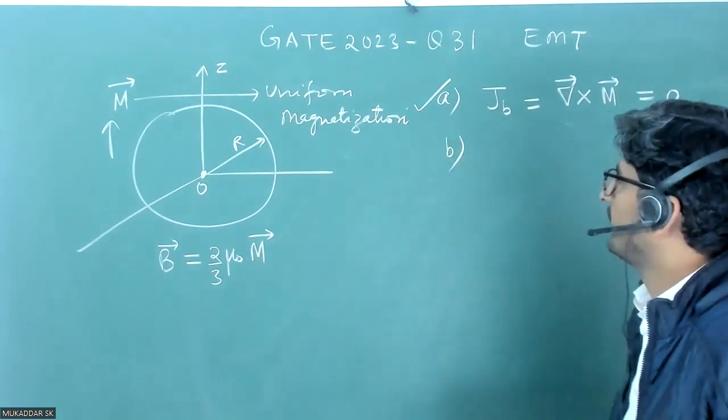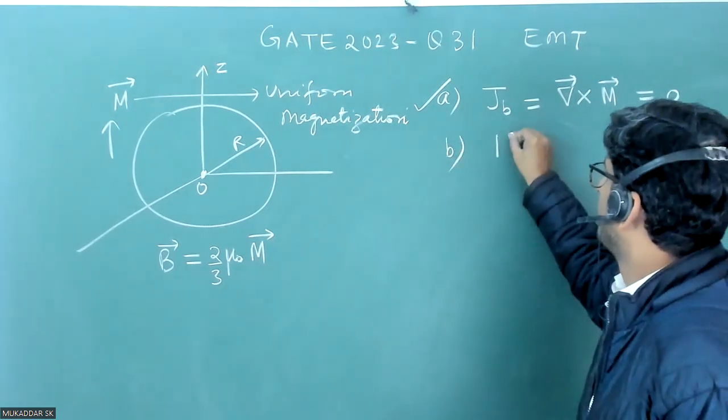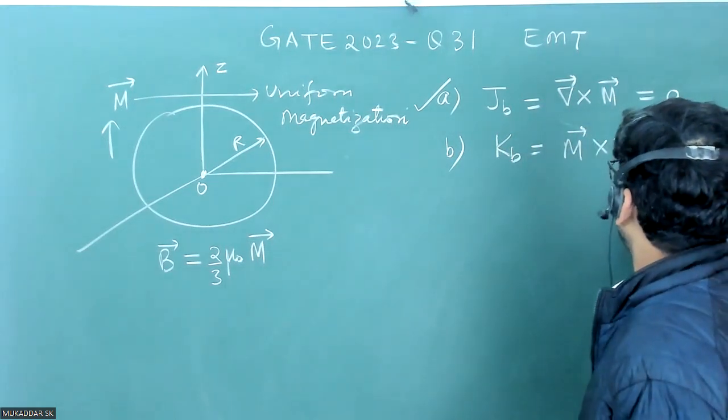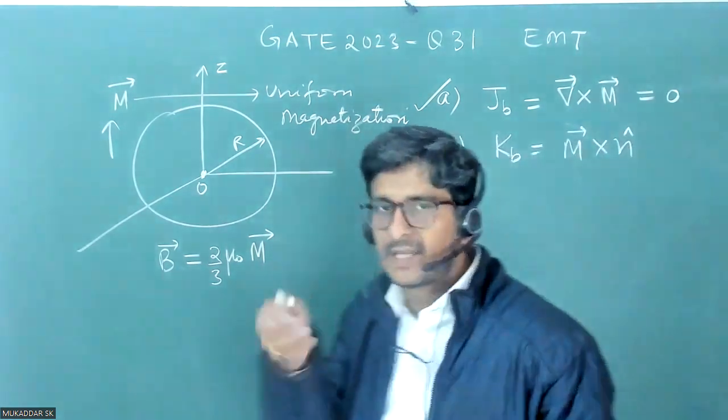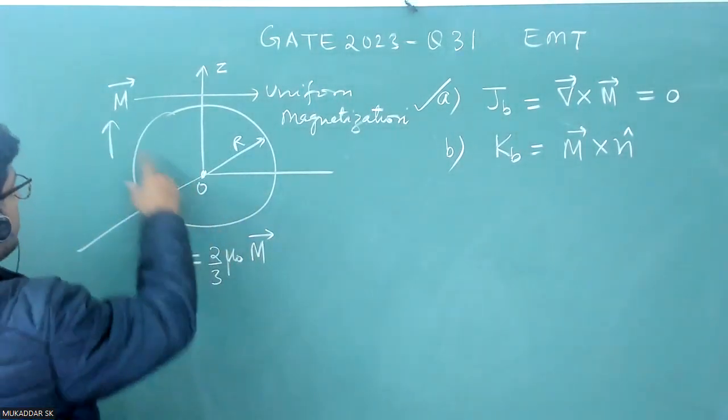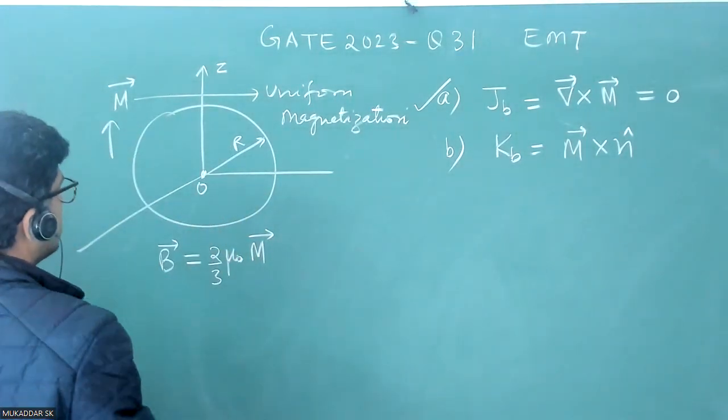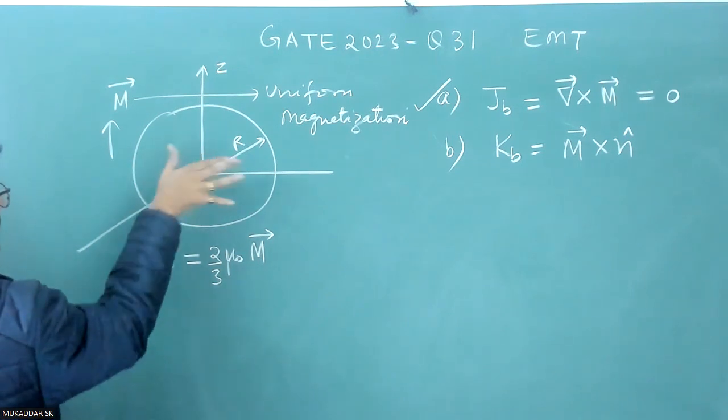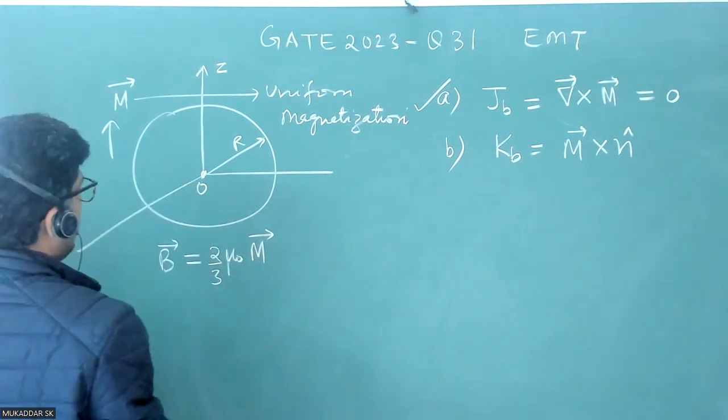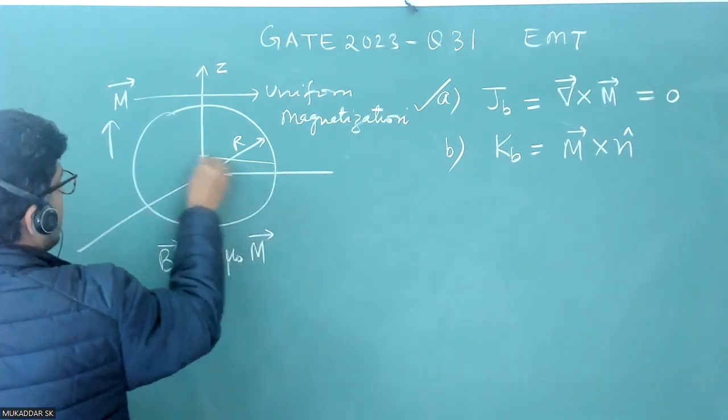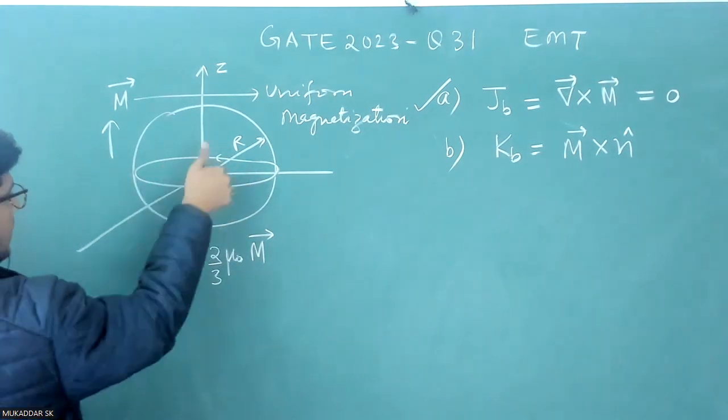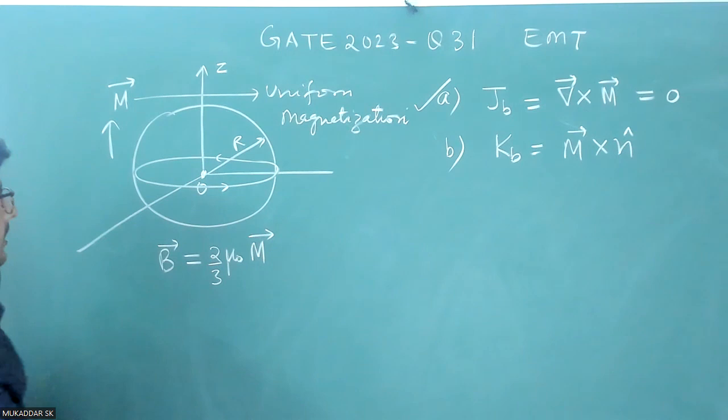About option B, they have asked something about KB and KB is equal to M cross N cap. KB is the surface current, which can be considered as responsible for this magnetization or magnetic field. Obviously surface current will be flowing like this to create a magnetization or magnetic field in this direction. On this surface, current will be flowing in phi cap direction.